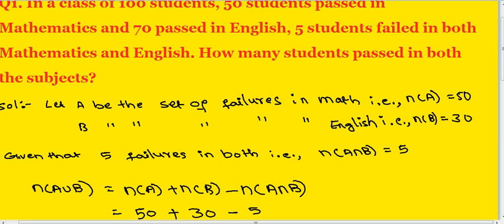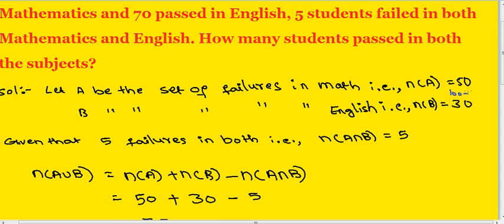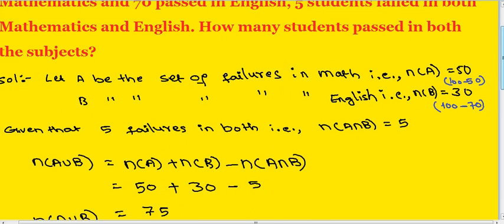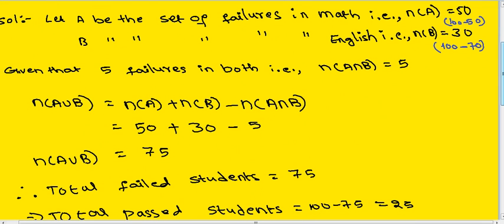Since 50 students passed in mathematics, failures in maths equal 100 minus 50, which is 50. For English, 70 passed, so failures equal 100 minus 70, which is 30. Given 5 failures in both, number of A intersection B equal to 5. Using the formula: number of A union B equals number of A plus number of B minus number of A intersection B. Substituting: 50 plus 30 minus 5. Number of A union B — total failed students — equals 75.